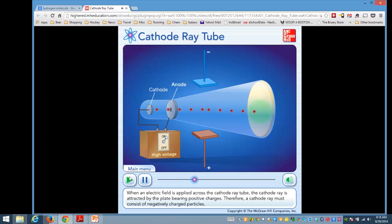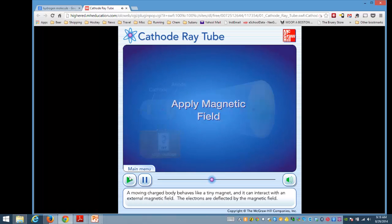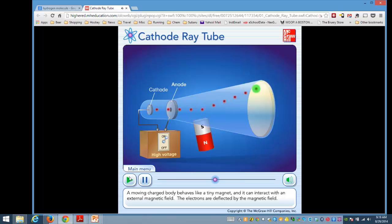When an electric field is applied across the cathode ray tube, the cathode ray is attracted by the plate bearing positive charges. Therefore, a cathode ray must consist of negatively charged particles. We know these negatively charged particles as electrons. A moving charged body behaves like a tiny magnet, and it can interact with an external magnetic field. The electrons are deflected by the magnetic field. As expected, when the direction of the external magnetic field is reversed, the beam of electrons is deflected in the opposite direction.